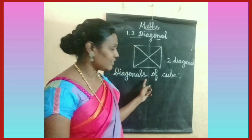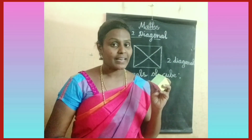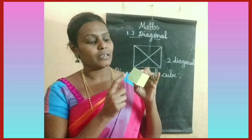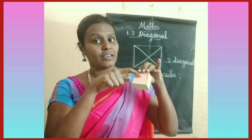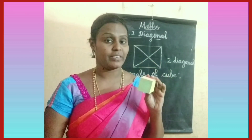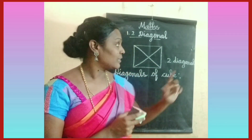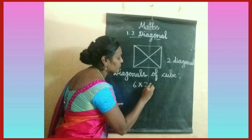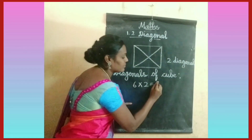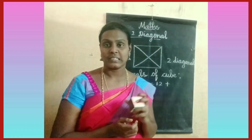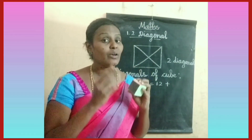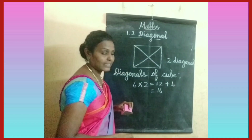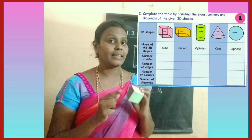Let us see the diagonals of a cube. A cube has 6 square faces. Each square has 2 diagonals, so 6 times 2 equals 12. Plus, the inner side of a cube has 4 diagonals. So 12 plus 4 equals 16 diagonals. A cube has 16 diagonals.